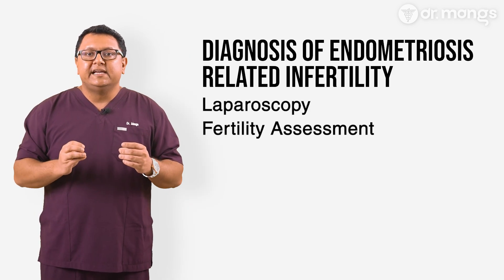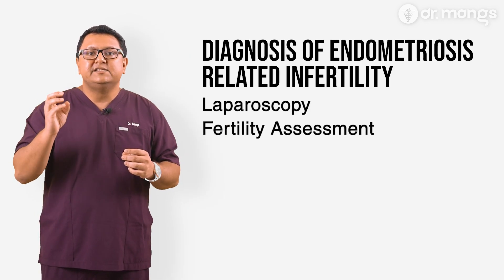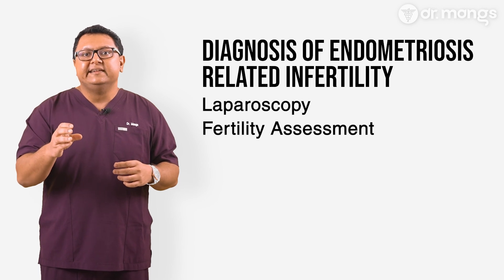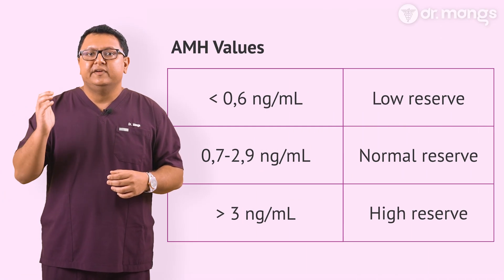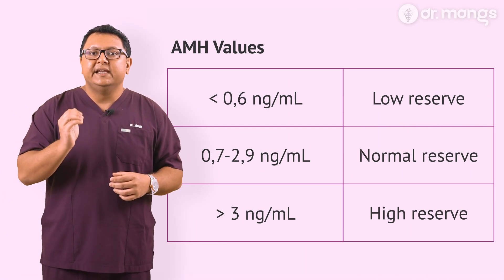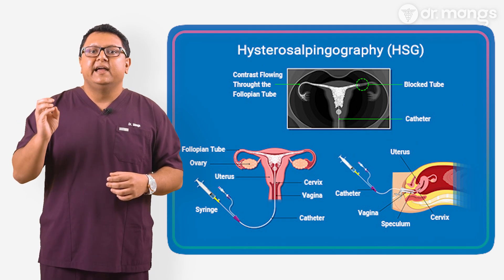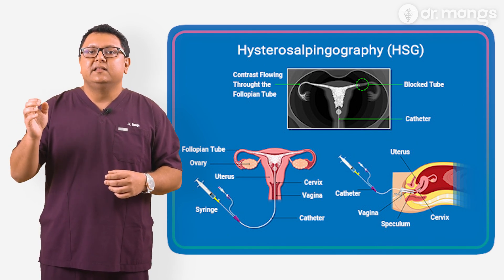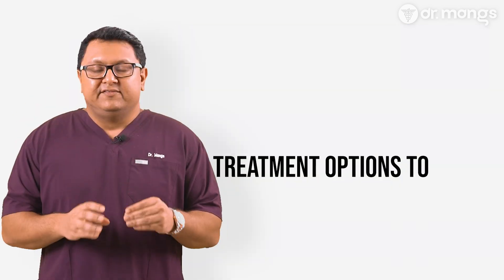Beyond diagnosing endometriosis, your doctor may recommend specific fertility tests such as assessing ovarian reserve through AMH levels, or performing tests like an HSG or a Hycoside to check the patency of the fallopian tubes.